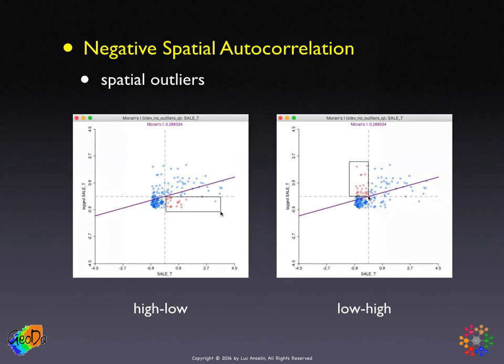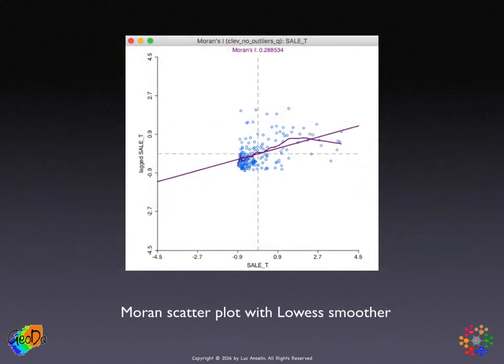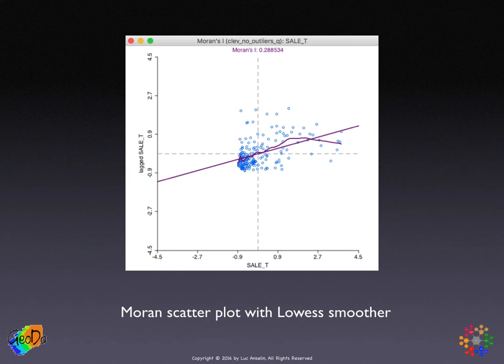Another aspect of the Moran scatterplot is that we don't have to stick with the linear fit. This graph illustrates a local regression fit referred to as a LOWESS smoother, which is based on a bandwidth of values in the x-range used to estimate the slope at each particular point, allowing you to assess whether the linear fit is a good representation of the data.